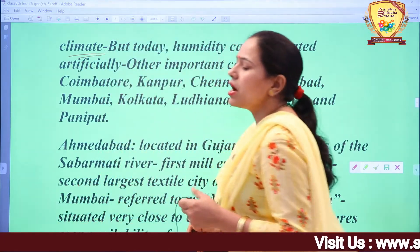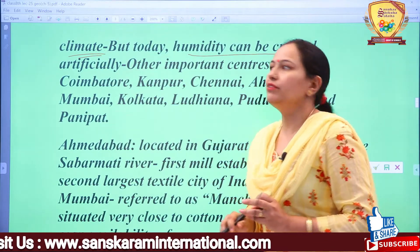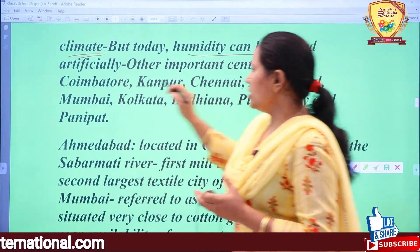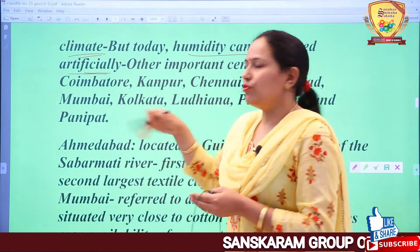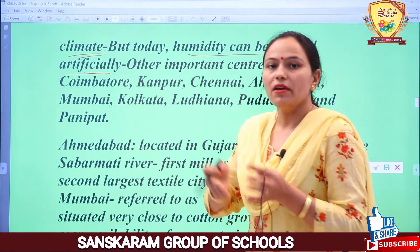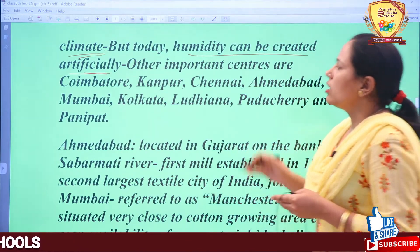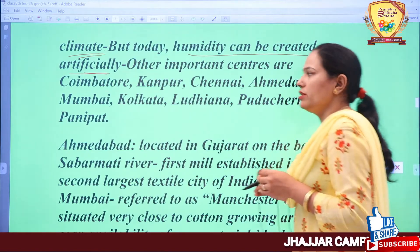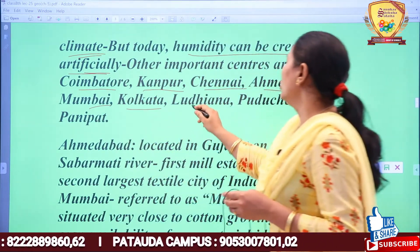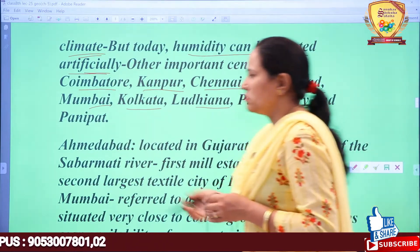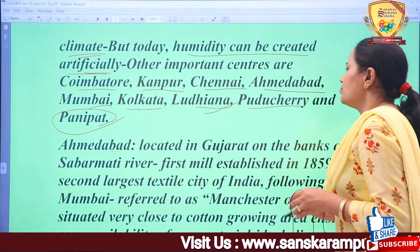Today, humidity is created artificially in areas that do not naturally have such a climate, allowing cotton textile mills to be established there too. Other important textile centers in India include Coimbatore, Kanpur, Chennai, Ahmedabad, Mumbai, Kolkata, Ludhiana, Puducherry, and Panipat. Panipat and Ludhiana are still very famous for textiles.